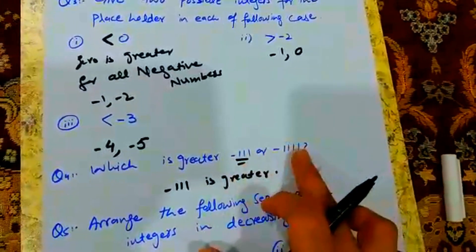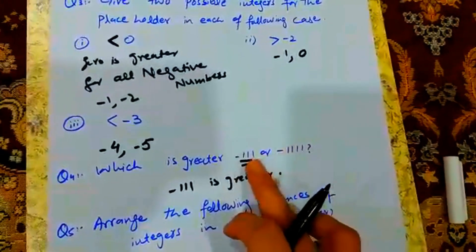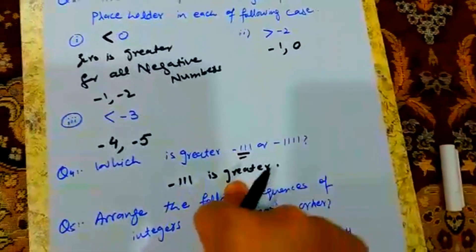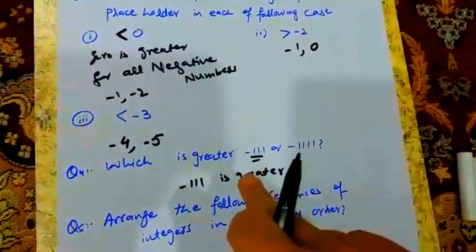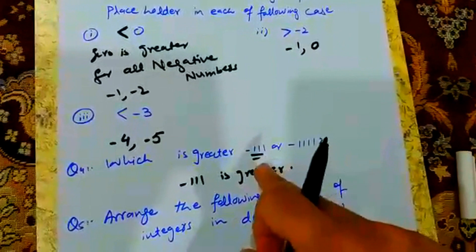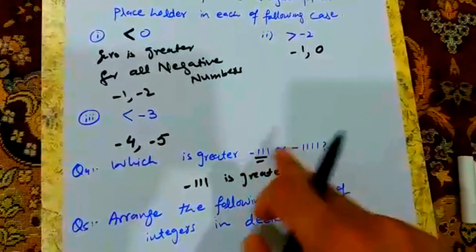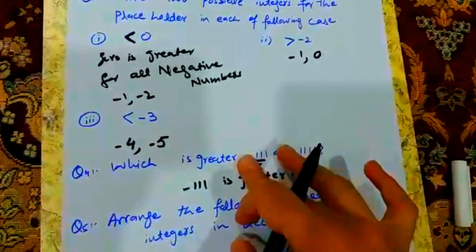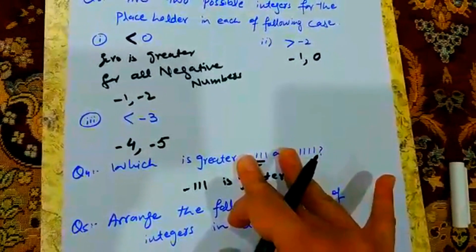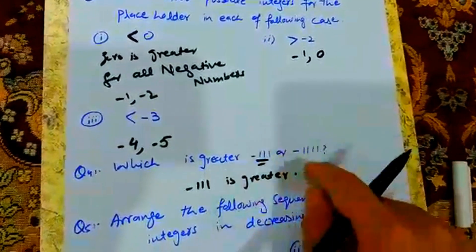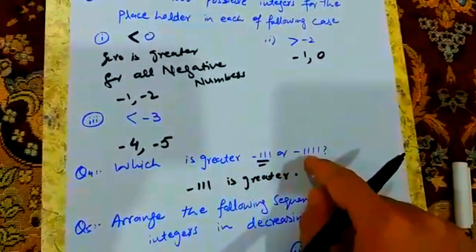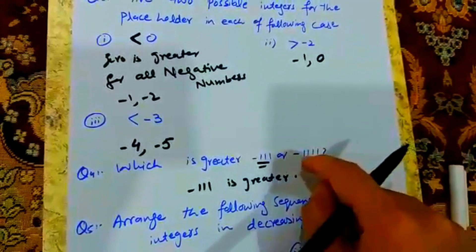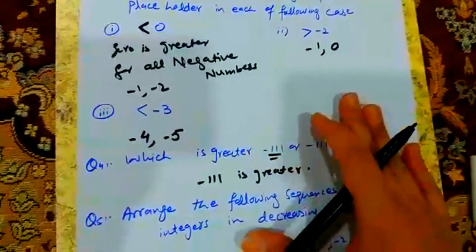Number 9: This term comes before and this term comes later on the number line, so this term will be bigger. Another comparison — minus minus, so that term is bigger. You know this number is bigger. If it is negative, this term is smaller and this term is bigger.